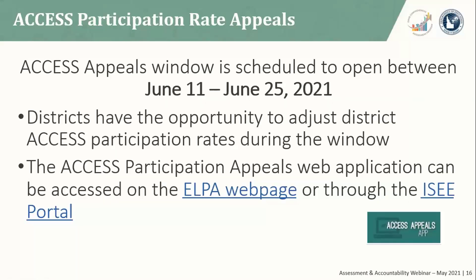The ACCESS appeals window is scheduled to open for two weeks starting on Friday, June 11th and ending on June 25th. The ACCESS appeals process provides districts and schools an opportunity to adjust their ACCESS participation rate for English learners based on specific appealable scenarios. Examples of students who would appear in the appeal application are: an English learner with a partial ACCESS test, ELs with no ACCESS test results, and non-English learners with a completed or partially completed ACCESS test.